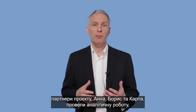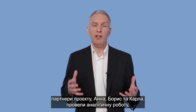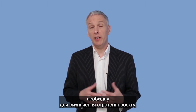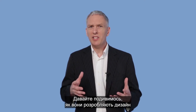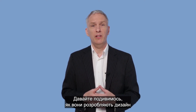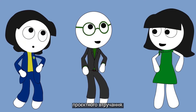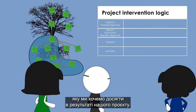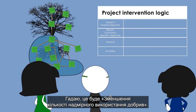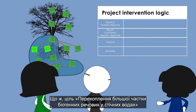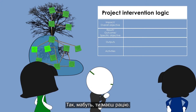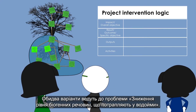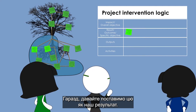In the previous videos, our project partners Anna, Boris, and Carla carried out the analytical work necessary to identify the project strategy. Let's now see how they design their project's intervention logic. They start from the highest possible objective: the reduced amount of excess use of fertilizer. Another candidate is a larger proportion of nutrients in runoff intercepted. Both lead to the issue of reduced level of nutrients reaching water bodies, so they consider putting that as their result.